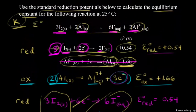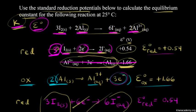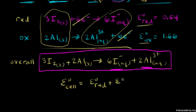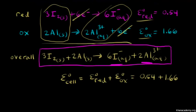Remember, our goal was to find the standard cell potential E° because from E° we can calculate the equilibrium constant K. To find the standard cell potential, all we have to do is add our standard reduction potential and our standard oxidation potential. That gives us positive 0.54 plus positive 1.66 volts, so E°cell equals 0.54 plus 1.66, which equals 2.20 volts.